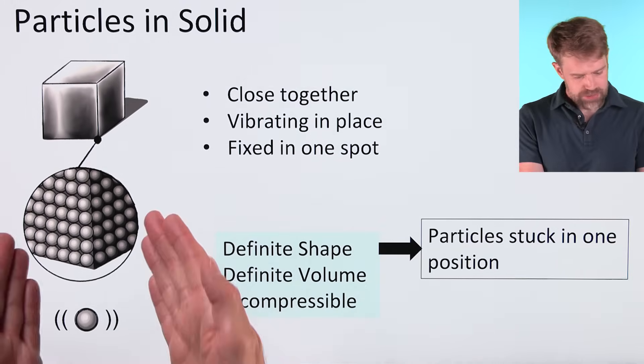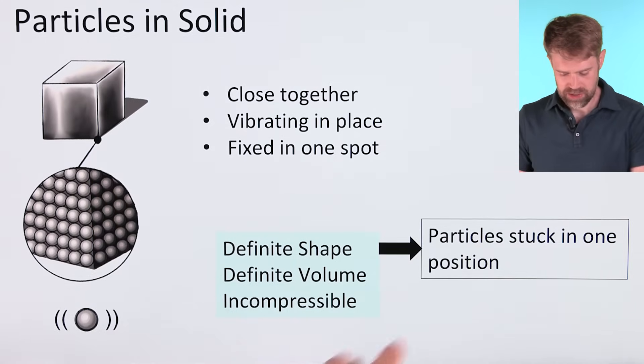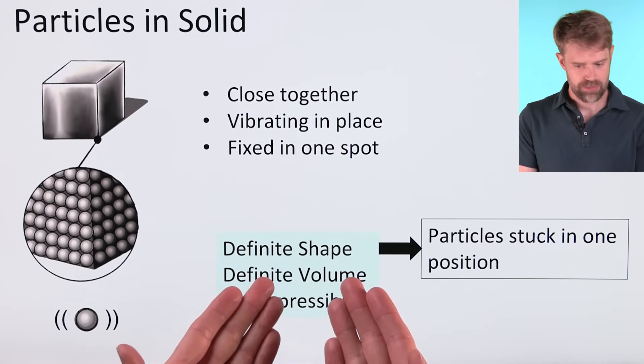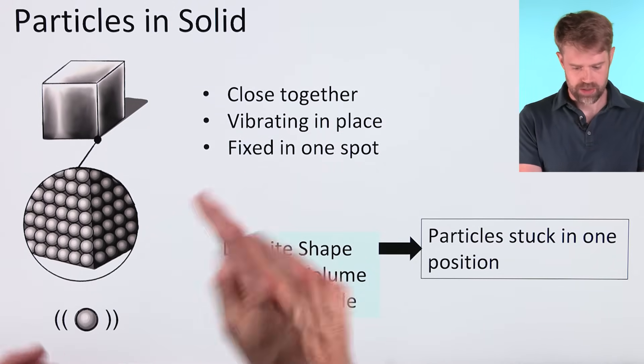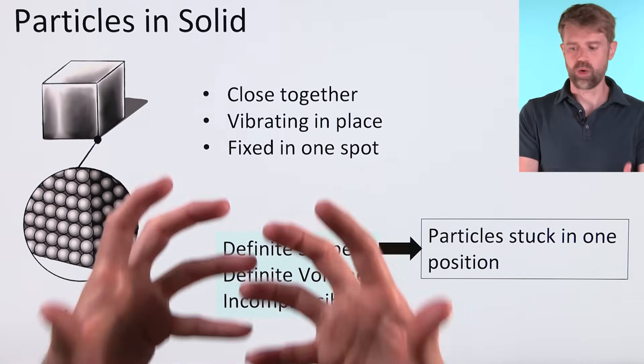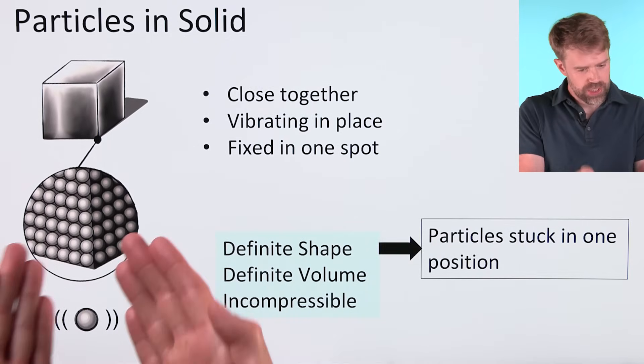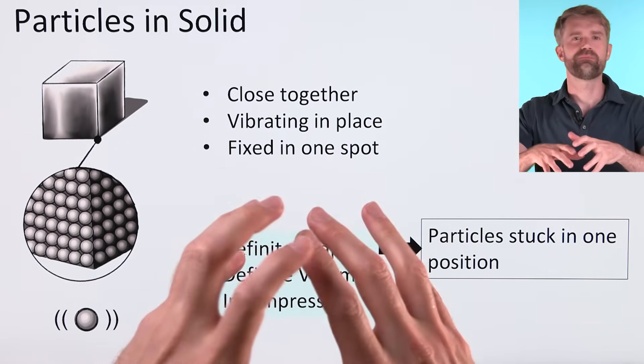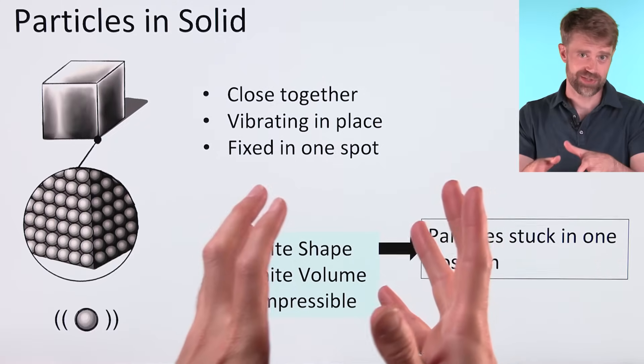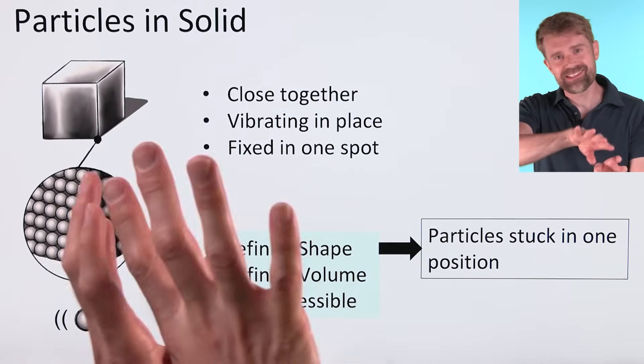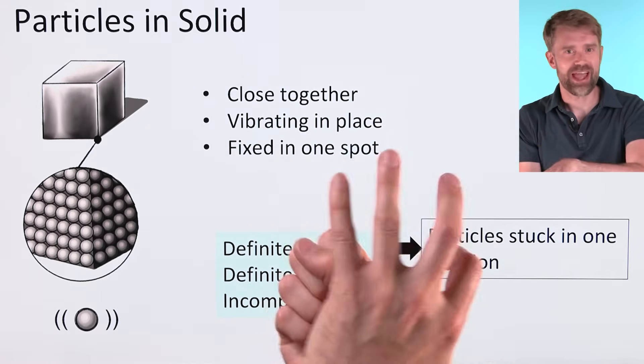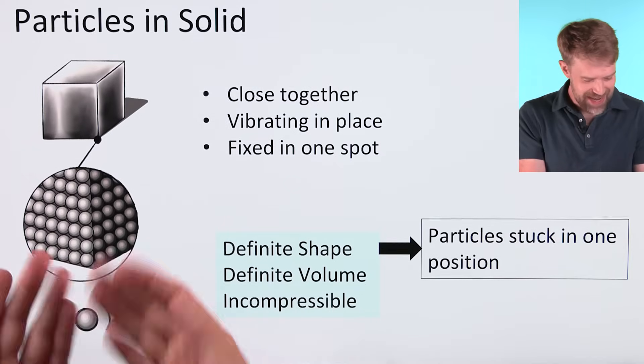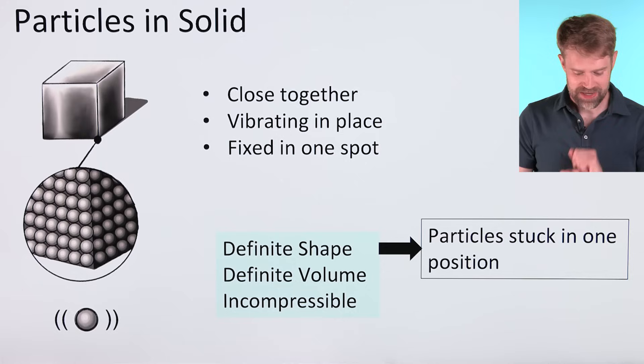The way these particles behave affects the big picture characteristics. For example, the reason why solids have a definite shape is because the particles in the solid are fixed in one spot. They're stuck in one position. In order for the cube to change shape, the particles that make it up would have to move into new locations. Imagine a brick house. The bricks are kind of like the particles. You can't easily push a brick house into a new shape because the individual particles, the individual bricks, can't move. It's the same way with the particles in a solid. Definite shape.